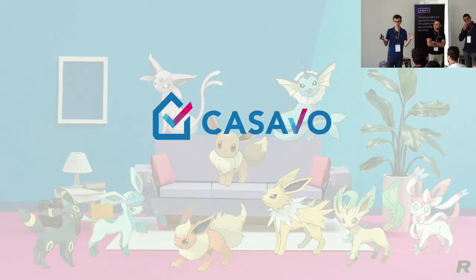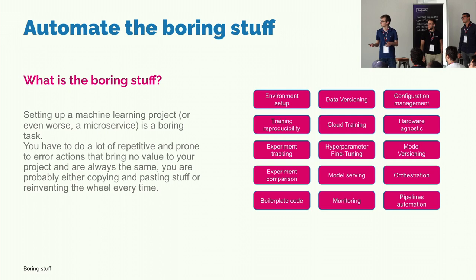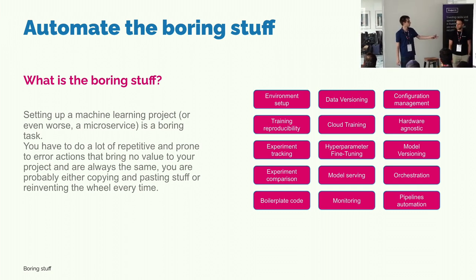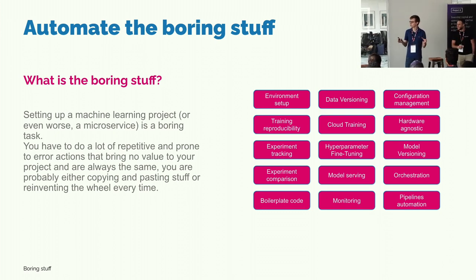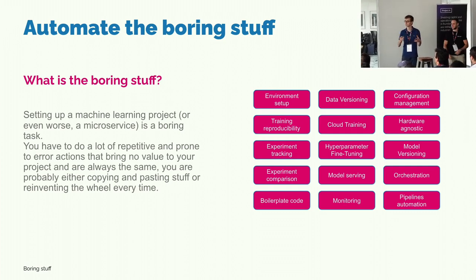We wanted to talk with you about how we had to automate a lot of boring stuff in Kazavo, especially on the machine learning side. There's a reason there are all the Pokémons on the slide — we had so many data projects that we needed a category big enough, like Pokémon, to give a name to all of them with a common theme. When you set up a machine learning project, or even worse, a microservice, you have all this boring stuff to do: environment setup, data versioning. We had to find a way to standardize our approach, because if we don't, best case we copy what we did last time and don't think about it. Worst case, we reinvent the wheel every time and won't improve our patterns and processes with machine learning.